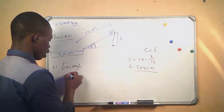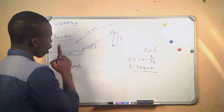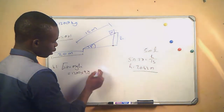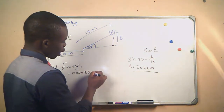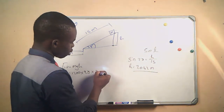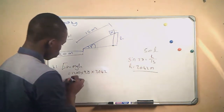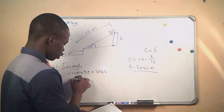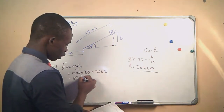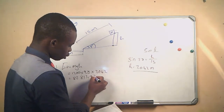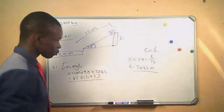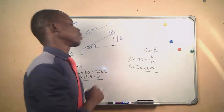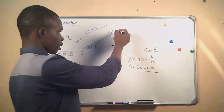From here we substitute into the equation. Our mass is 1200, our gravitational acceleration is 9.8, and our height is 7.042 meters. This gives us a potential energy of 82,813.92 joules. This is the potential energy of the object as it is resting — let's call this point A.